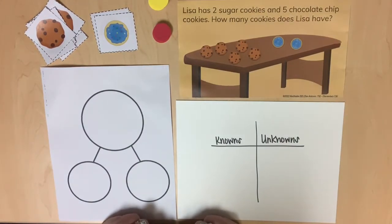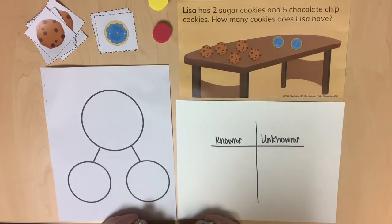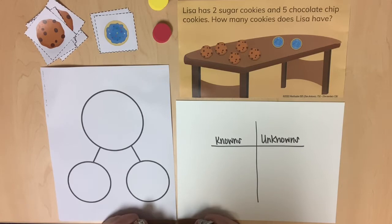Just as we used ACT IT OUT as a problem-solving strategy on a part-part-whole work mat, we encourage students to ACT OUT the part-part-whole problem situation on a number bond. The SOLVE problem-solving process is very purposefully integrated into instruction.